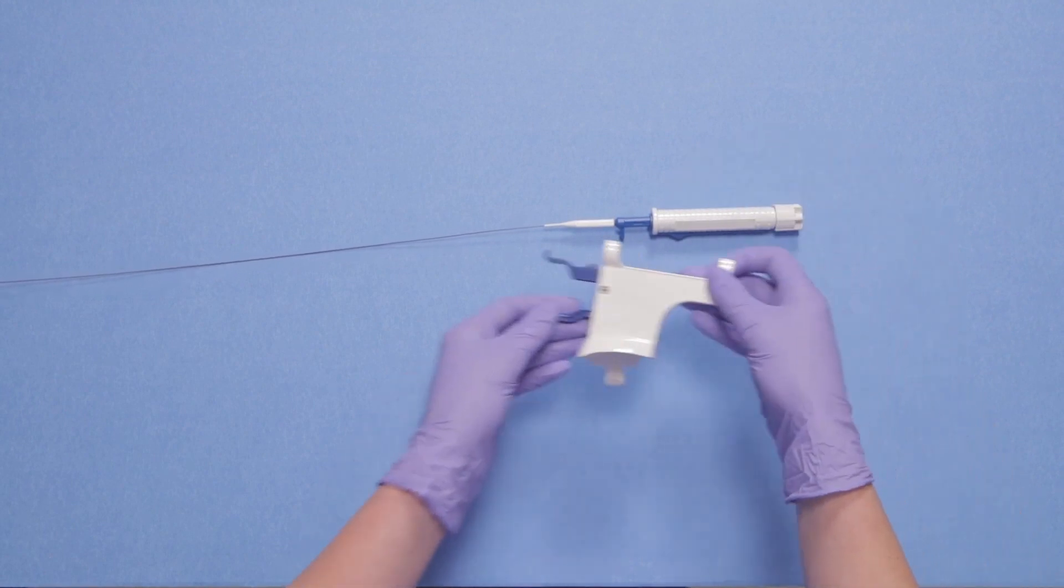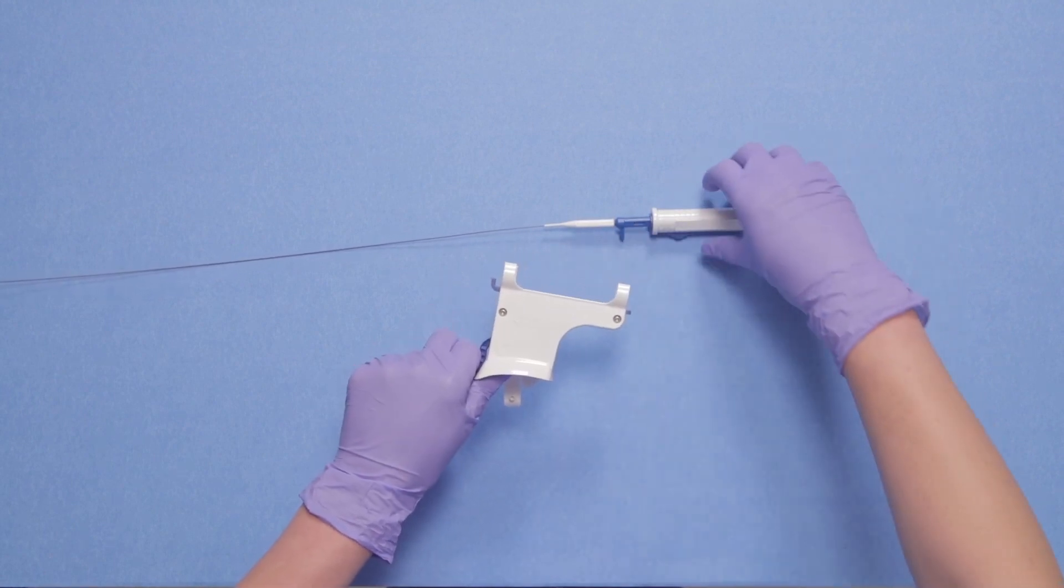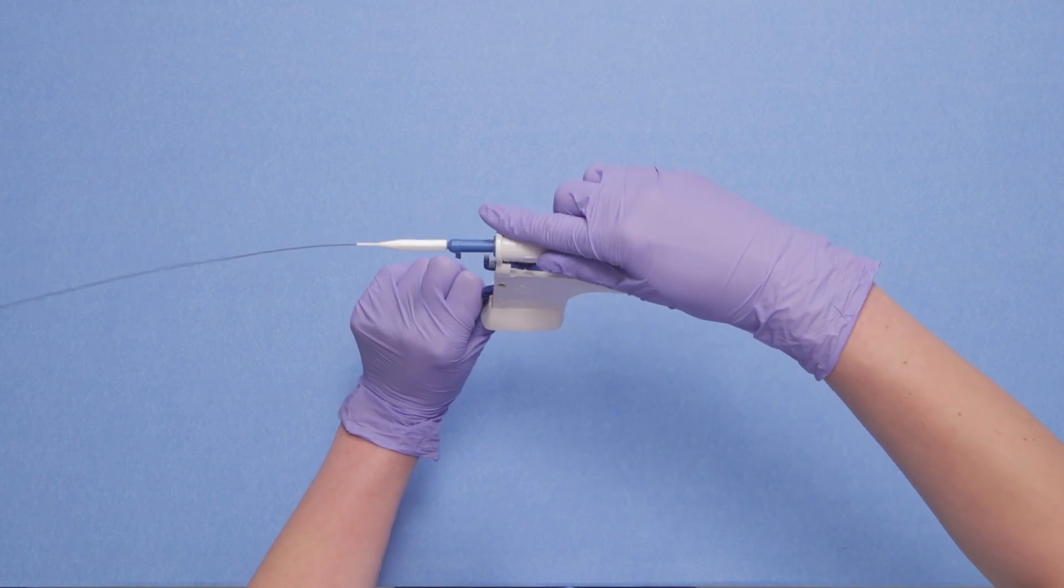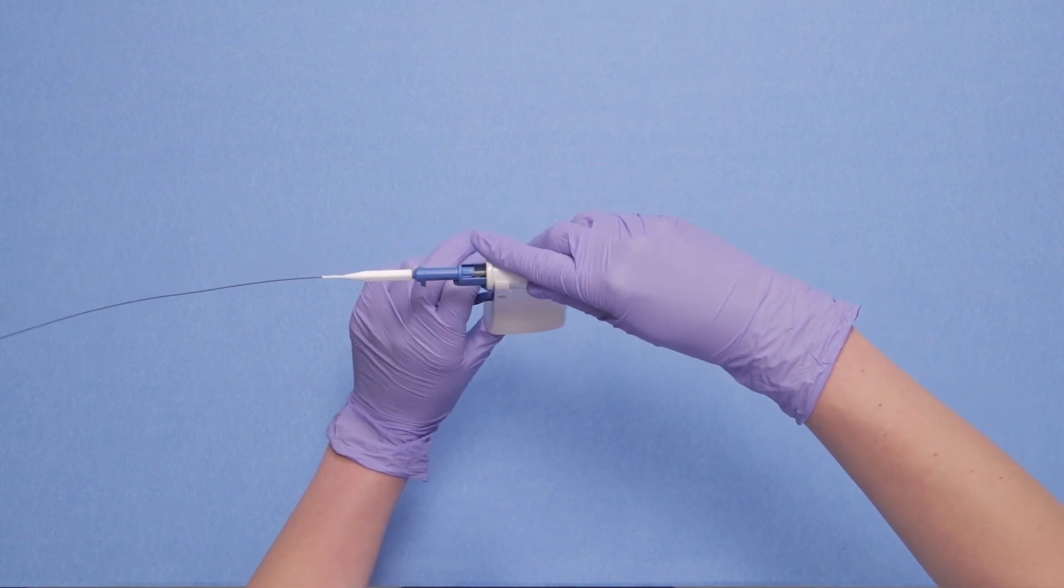Next, pick up the LithoVue Empower device and hold down the trigger. Snap your Boston Scientific retrieval device into the Empower device by matching the blue ridge on the handle to the blue indentation on the LithoVue Empower device. The handle will snap into place when secured correctly.